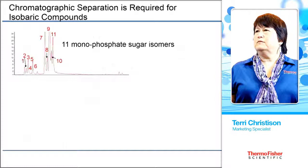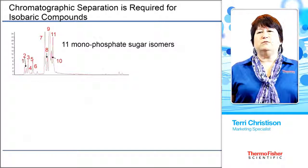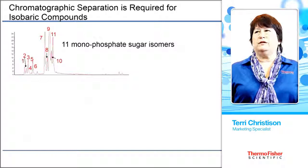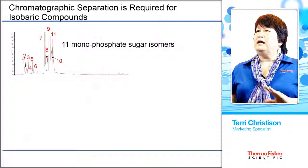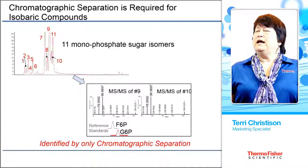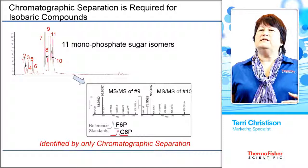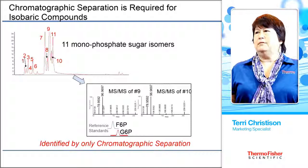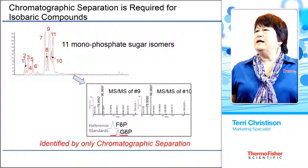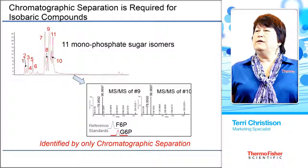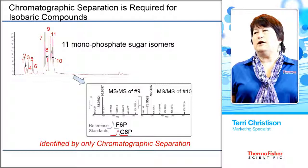We compared ion chromatography as the front-end separation with other separation methods coupled to the same mass spec, for a direct comparison between three analytical separation methods. With ion chromatography we were able to get 11 monophosphate sugar isomers. And why, if the mass spec has such high resolution, do we need a chromatography separation? Isobaric means it has the same mass, but it also means the mass fragmentation patterns are the same. Looking at the comparison between peak 9 and peak 10, they have the same MS-MS fragmentation patterns. The only way we can tell that peak 9 is fructose 6-phosphate and peak 10 is glucose 6-phosphate is because of retention time.